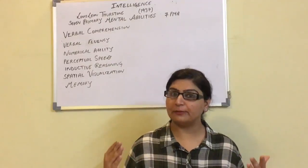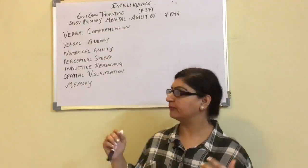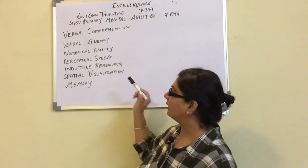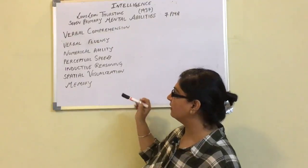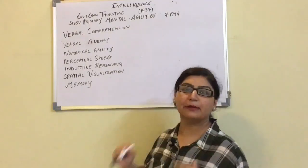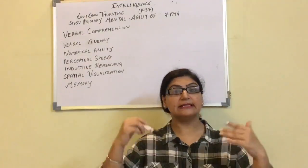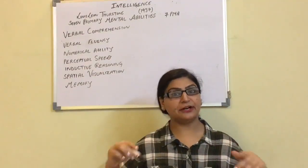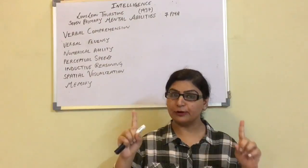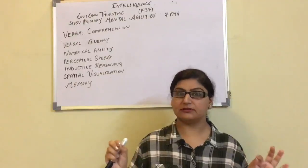The 7 primary mental abilities are: verbal comprehension, verbal fluency, numerical ability, perceptual speed, inductive reasoning, spatial visualization, and memory. He said intelligence is a cluster of abilities, and these abilities are independent of each other. In all mental operations, there is one primary factor.